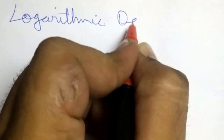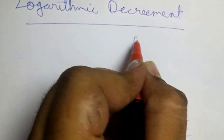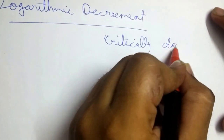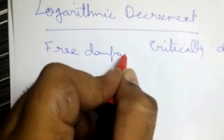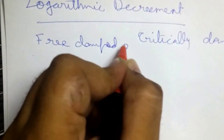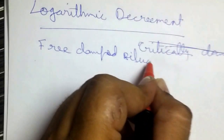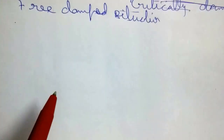Let us now discuss logarithmic decrement. This is a topic under the free damped vibration situation — not critically damped. Here we will study how much is the measure of damping in such a system.